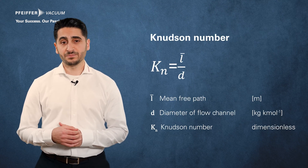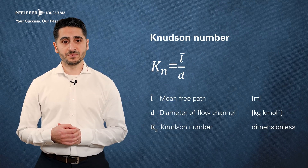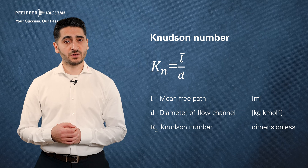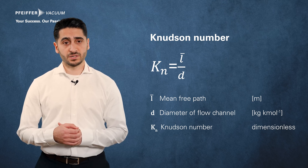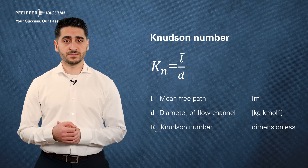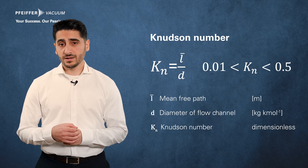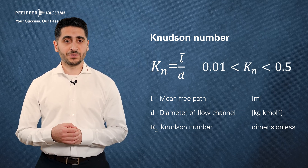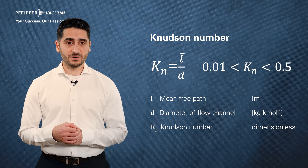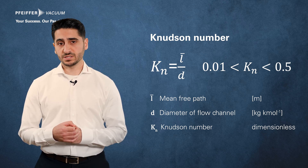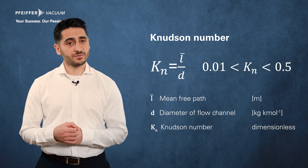To describe the flow behavior of the gas flow in the laminar and molecular flow regimes, the Knudsen number is used. The value of the Knudsen number characterizes the type of gas flow and assigns it to a particular pressure range. If the Knudsen number is between 0.01 and 0.5, this is termed Knudsen flow. Since many processes are in the medium vacuum range, this type of flow occurs quite often.